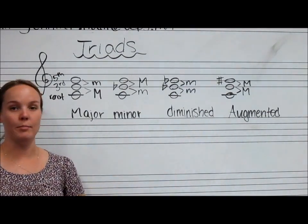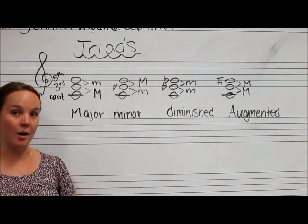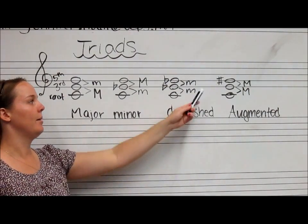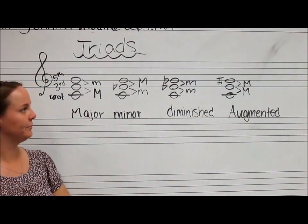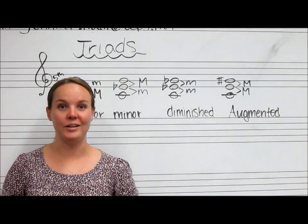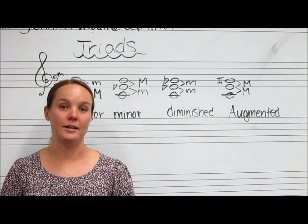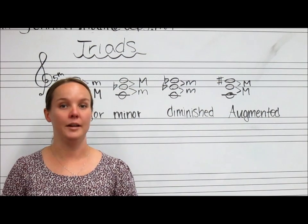We also have augmented triads, and that's very similar to our major triad except you're going to have a major third on bottom and a major third on top. We accomplish that by raising the top note. With these principles you can identify any triad starting on any note — you just have to compare the intervals of a third between all of your notes.